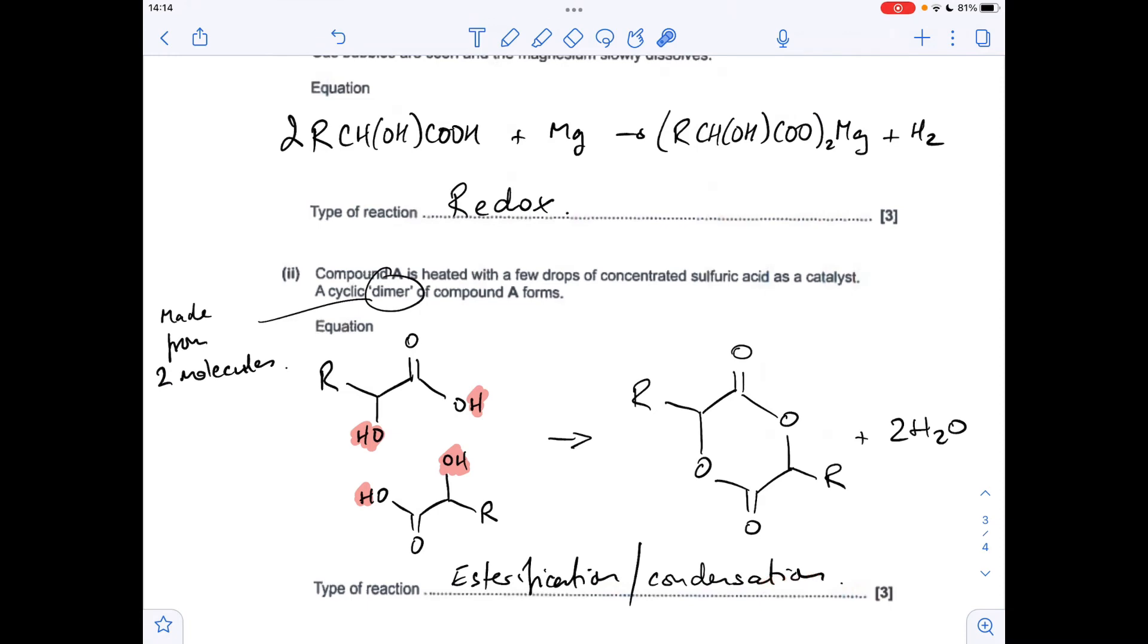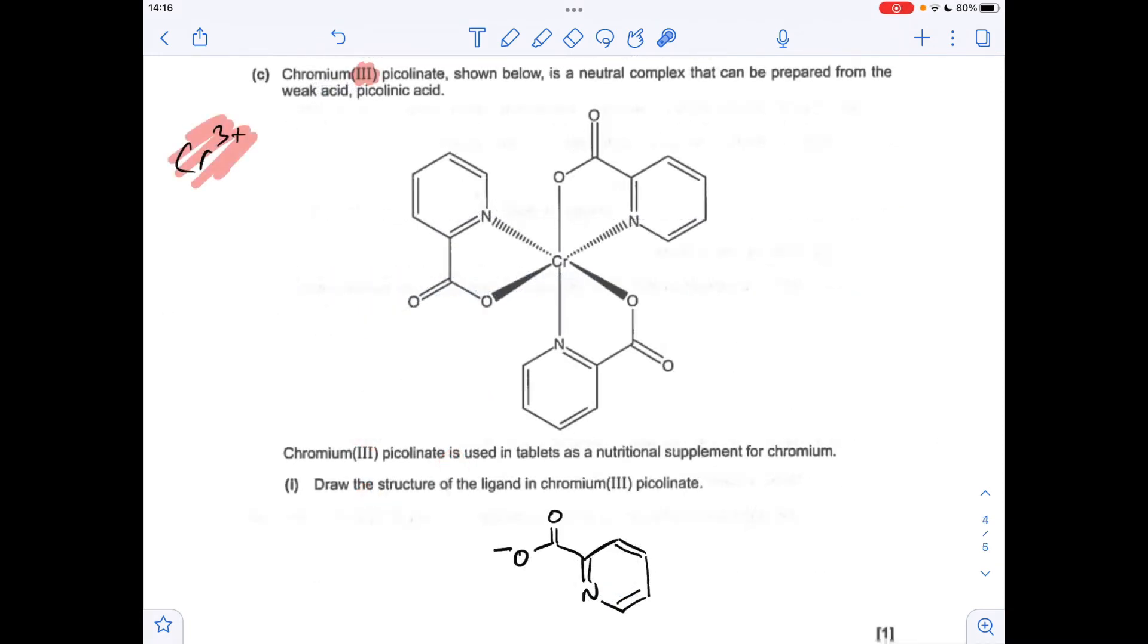So moving on to part C, the question turns to transition element chemistry now. We're told we've got this complex chromium(III) picolinate. So the three, that Roman three, means it's chromium 3+. So obviously we've got three identical ligands around there, so they must have a 1− charge each to keep the whole thing neutral. We're told it's neutral.